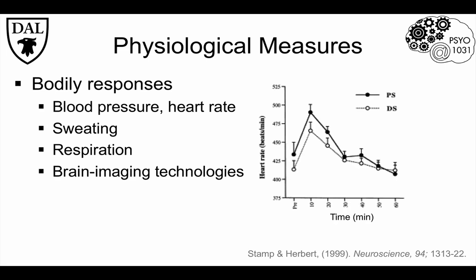This is a study I did in rats looking at the effect of stress on heart rate, which is shown in beats per minute on the y-axis. The black circles show average heart rate for control animals given a placebo, while the white circles show average responses for animals treated with a potential anti-stress drug. This shaded region shows heart rate for both groups before the stressor was introduced.